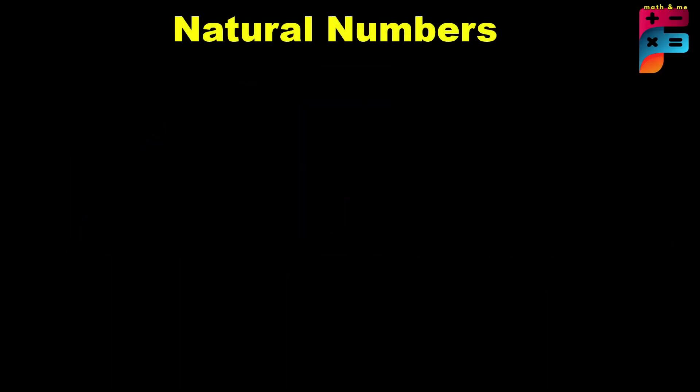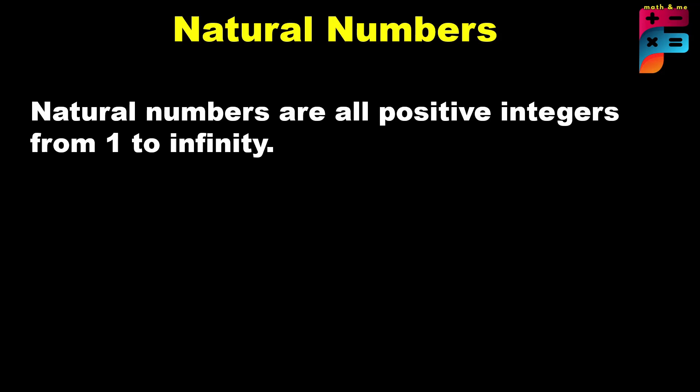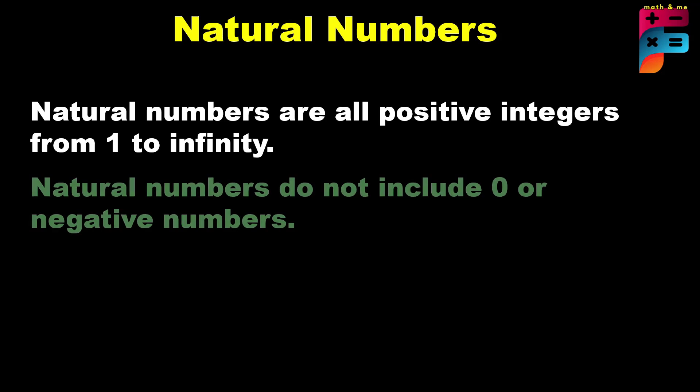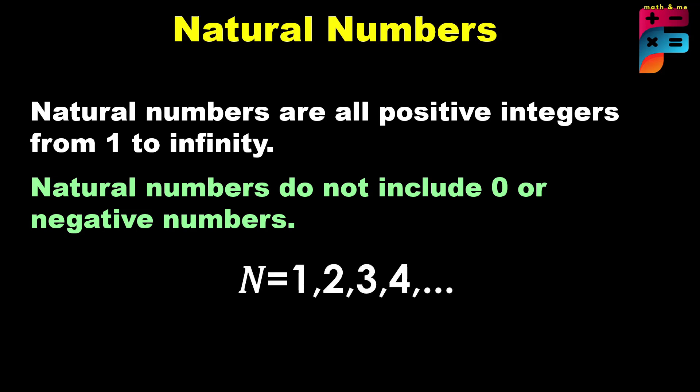First, natural numbers. Natural numbers are all positive integers from 1 to infinity. Natural numbers do not include zero or negative numbers. For example: 1, 2, 3, 4, and so on. We denote natural numbers by N.